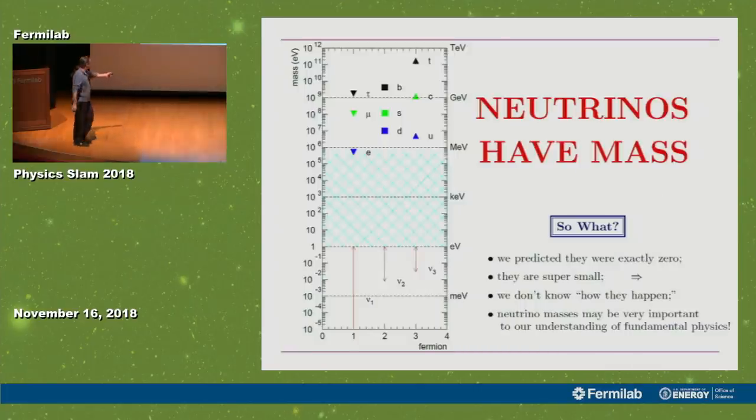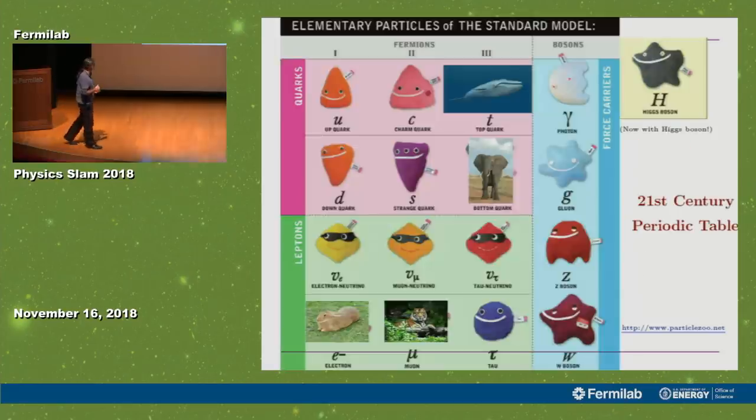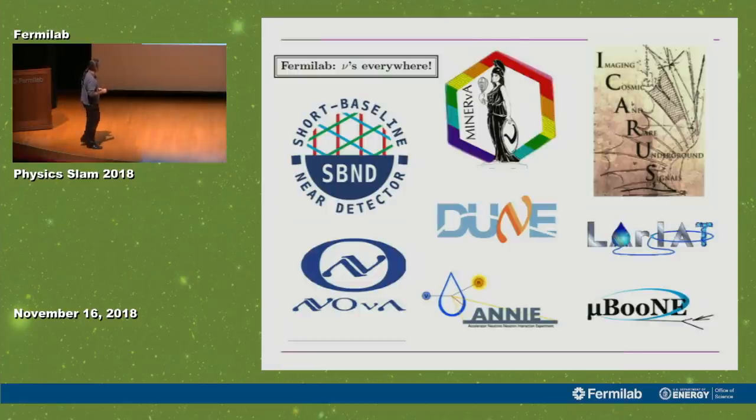Now, this is very important because we don't know how these masses happen, and we also think that they mean something very important. And because my time is up, I want to remind you that we're still doing a lot of neutrino experiments. Fermilab now has all of these different neutrino experiments going on for us to try to understand what's happening. Thank you.